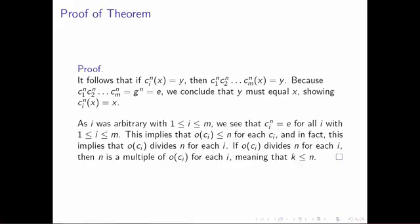Since i was arbitrary — just some value chosen in the range from 1 to m — we conclude that c_i^n = e for all i in that range, just as we wanted. What this implies is that the order of each c_i is less than or equal to n.